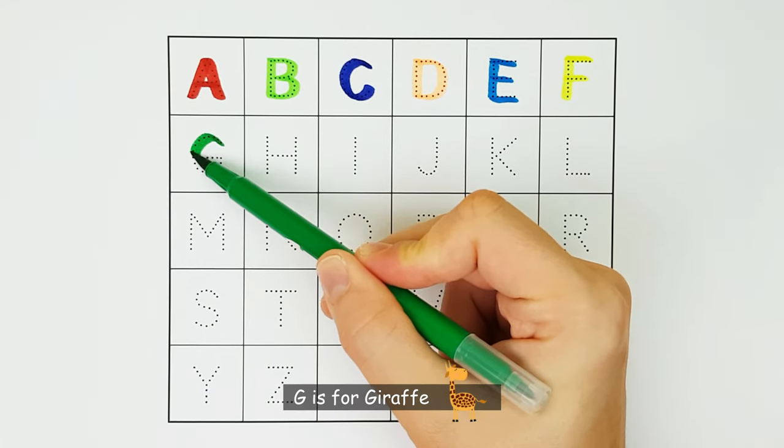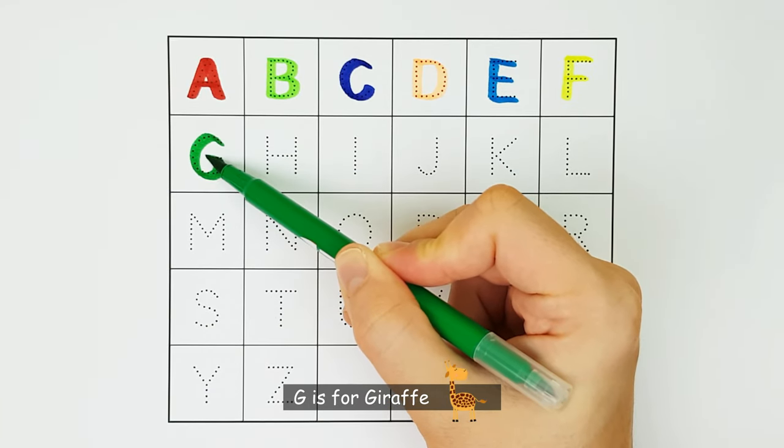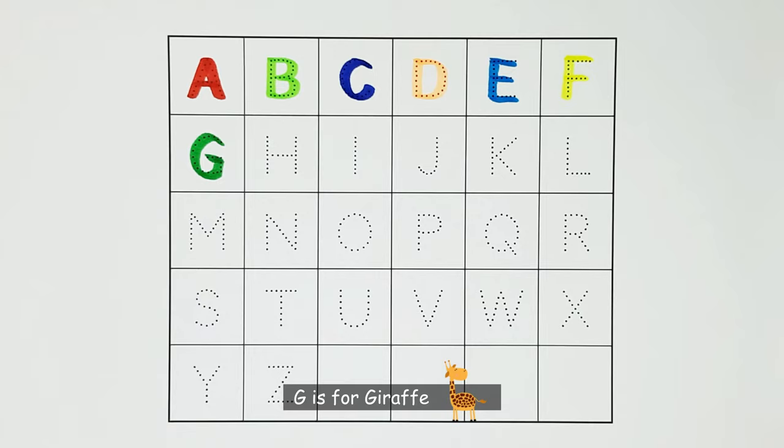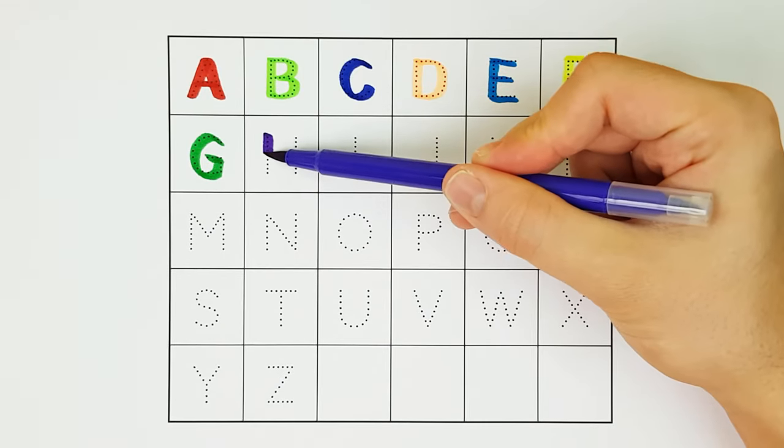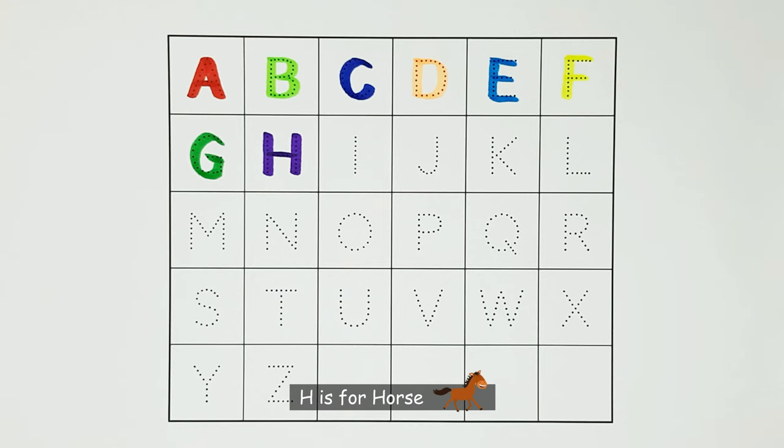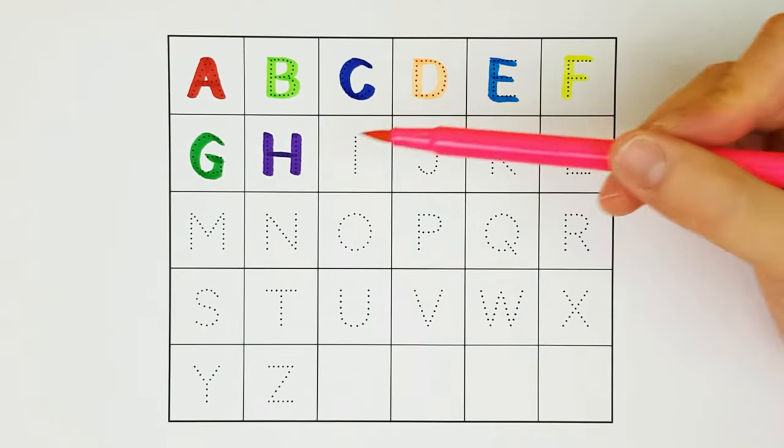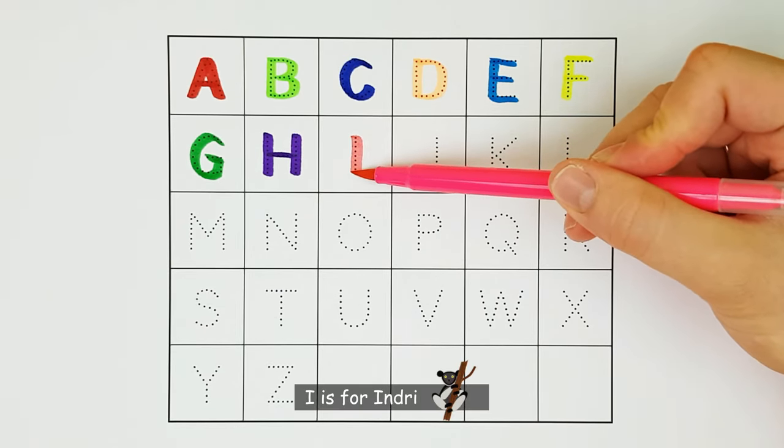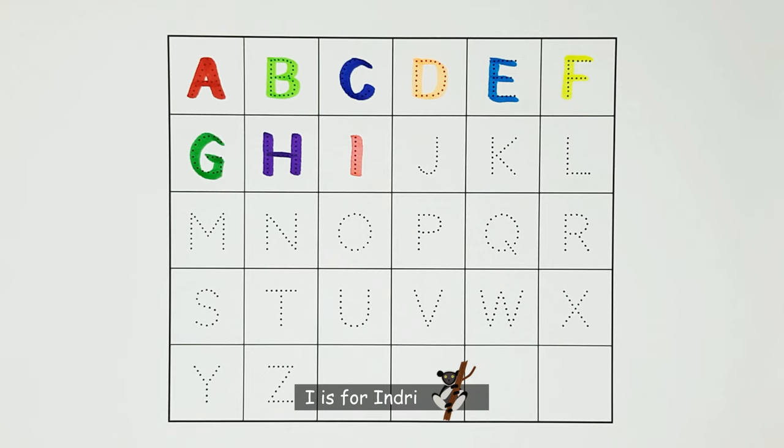G. G is for Giraffe. G. H. H is for Horse. H. I. I is for Iguana. I.